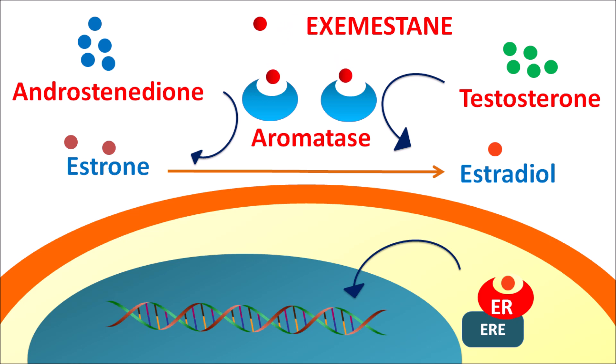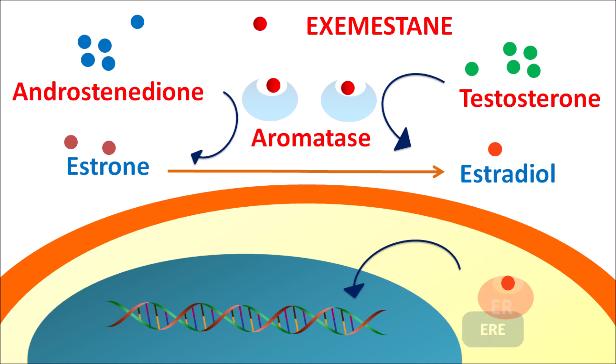Exemestane is a steroidal aromatase inhibitor. Because of its steroidal structure, it can easily bind to the aromatase enzyme and inhibit its activity. When this enzyme is inhibited, androstenedione and testosterone cannot be converted into estrogens, resulting in decreased estrogen levels in postmenopausal women. When estrogen levels are reduced, activation of estrogen receptors is reduced, resulting in decreased proliferation and progression of breast cancer.